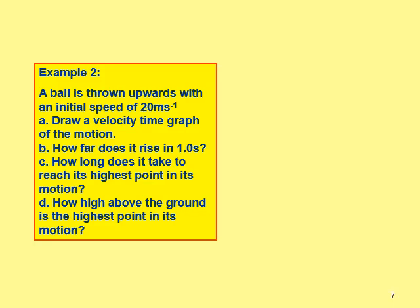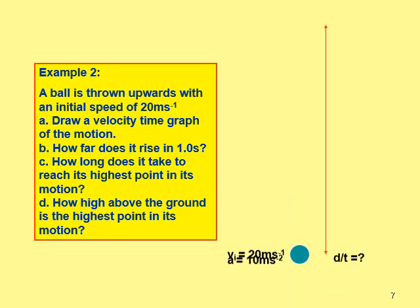Moving on to a second example: you're out on the yard with a basketball, and you throw it upwards with an initial speed of 20 meters per second. Draw the velocity-time graph of the motion. How far does it rise in one second? How long does it take to reach its highest point? And how high above the ground is the ball at its highest point?